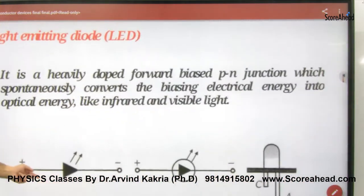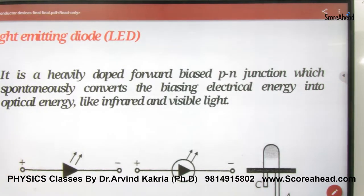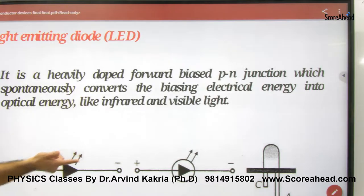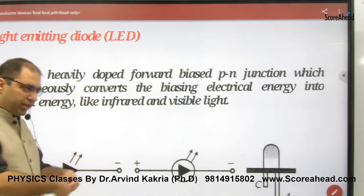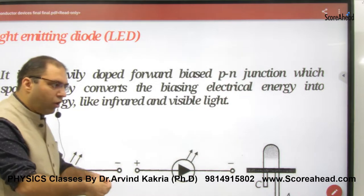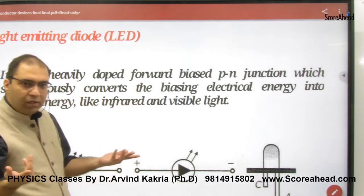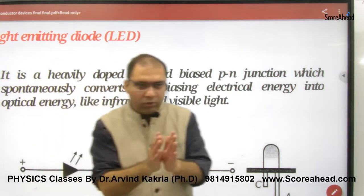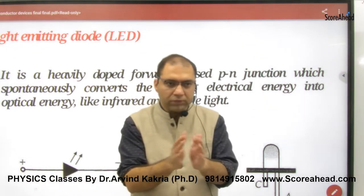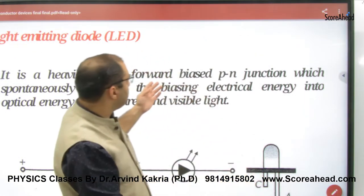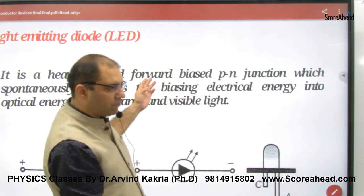Next is the Light Emitting Diode, called an LED — like the yellow LEDs you see. LEDs are light emitting diodes: they take electricity and emit light. The logic is that current passes through the diode in forward biasing — LEDs work in forward biasing, not in reverse. When electrons and holes are pushed toward the junction by the forward bias battery, they recombine.